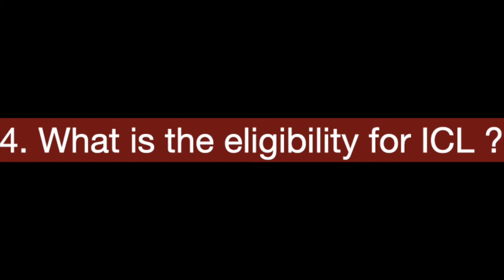What is the eligibility for ICL? Age is the foremost eligibility — the patient should be between 21 to 45 years. The patient should not have any eye diseases like glaucoma or uveitis. They should also have certain pre-ICL tests which will tell us about the space availability in the eye for implanting the lens and about the inner layer of the cornea called the endothelium. If all these tests are normal, patients are fit for the procedure.